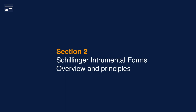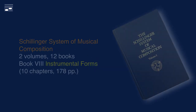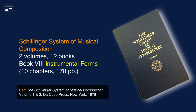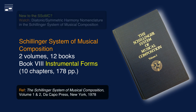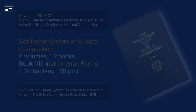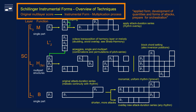Instrumental forms are found in book 8 of the two-volume book set on the Schillinger system of musical composition. This almost 200-pages-long book consists of 10 chapters. This diagram is an overview of the techniques for creating instrumental forms from that book.